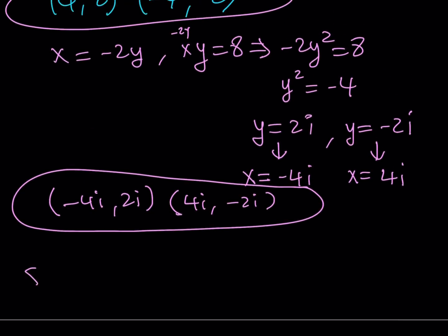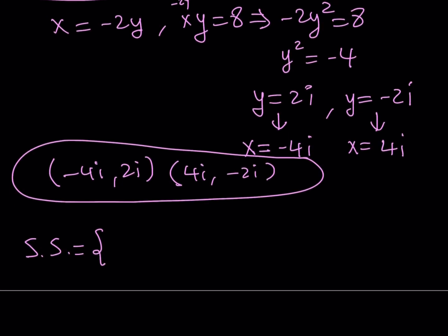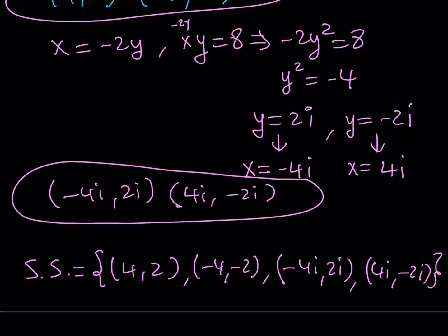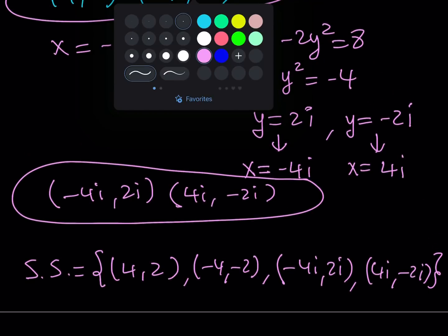Let's go ahead and write our solution set to conclude the video here. I got (4, 2) and (-4, -2). Notice that here, x and y are both positive or both negative. With the complex, non-real solutions, it's a little different story. We got (-4i, 2i) and (4i, -2i). And that is basically all the solutions we can come up with.